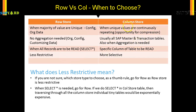There is another point here: row is less restrictive and column is more selective. So as a thumb rule, if you are not sure which type of store should be chosen, always go for row store because it is less restrictive.